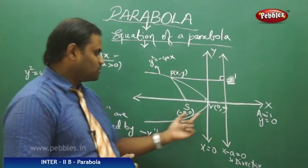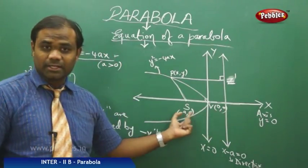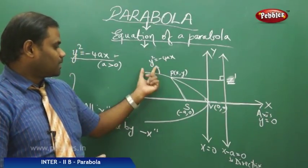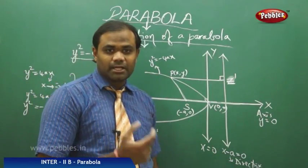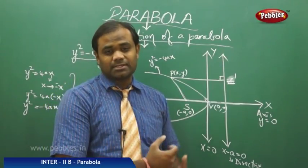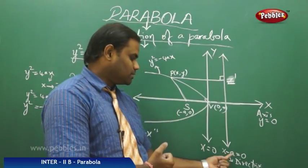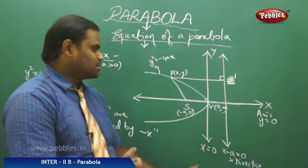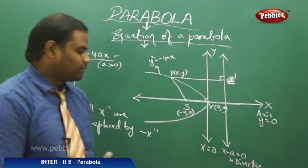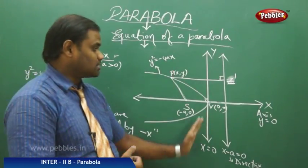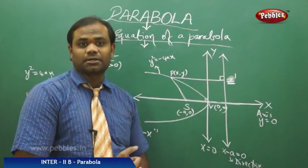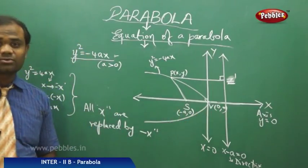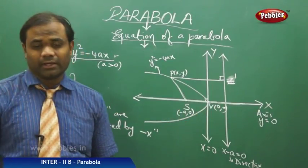So for y² = −4ax, the focus (a, 0) becomes (−a, 0) because all x coordinates are negated. The directrix x + a = 0 is replaced by x − a = 0. The axis, Y-axis, and vertex remain the same; the remaining properties change accordingly for the parabola y² = −4ax.